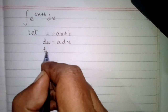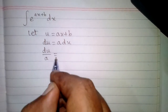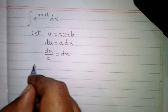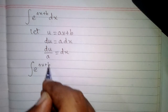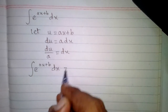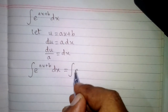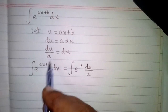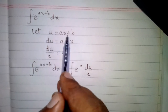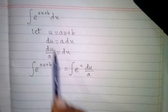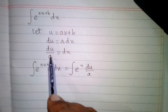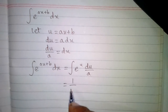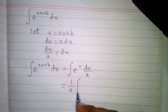Now we can write du upon a is equal to dx. So the integral of e to the power ax plus b with respect to x is equal to the integral of e to the power u times du upon a. We have put u in place of ax plus b, and in place of dx we have put du upon a.